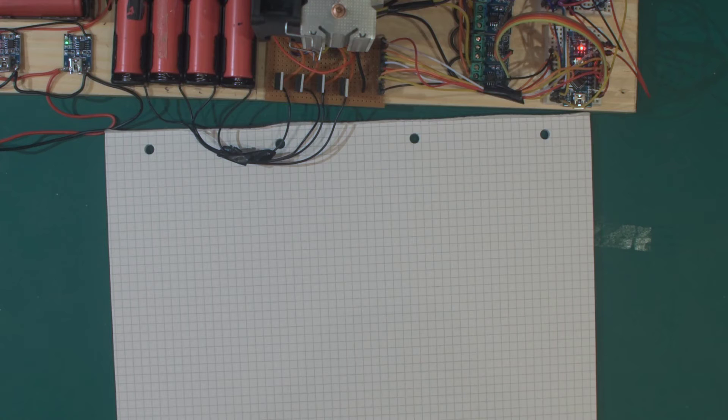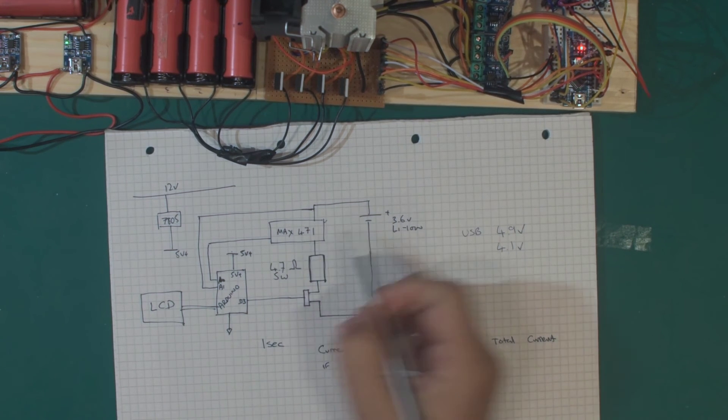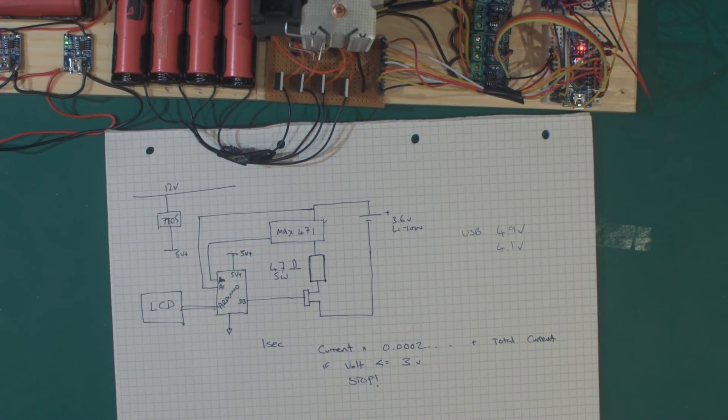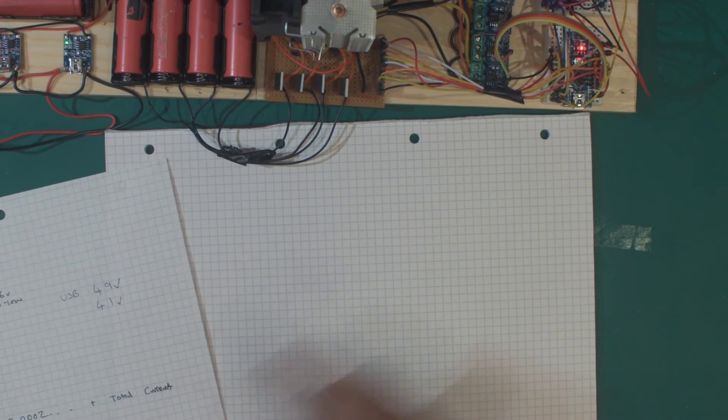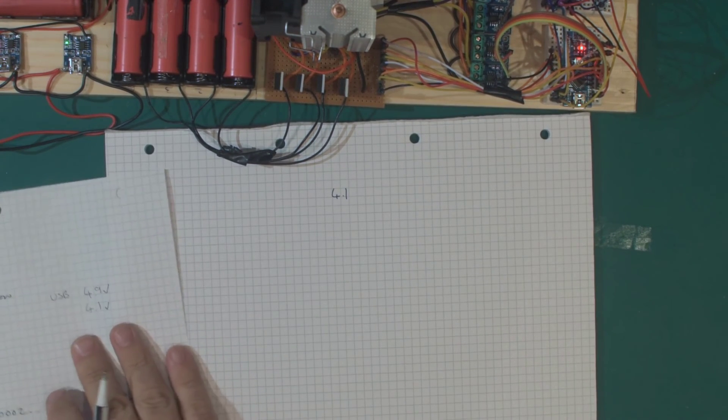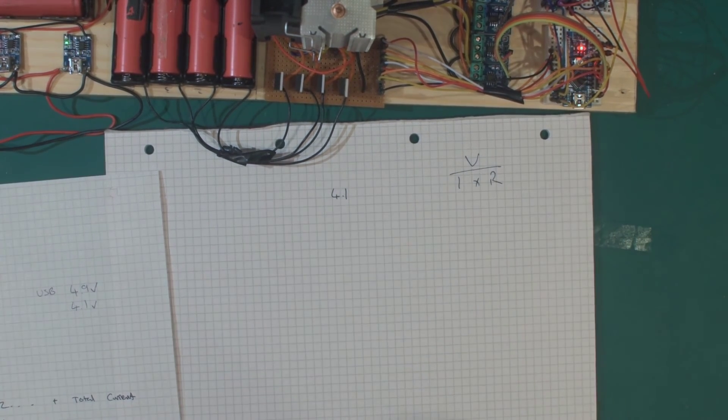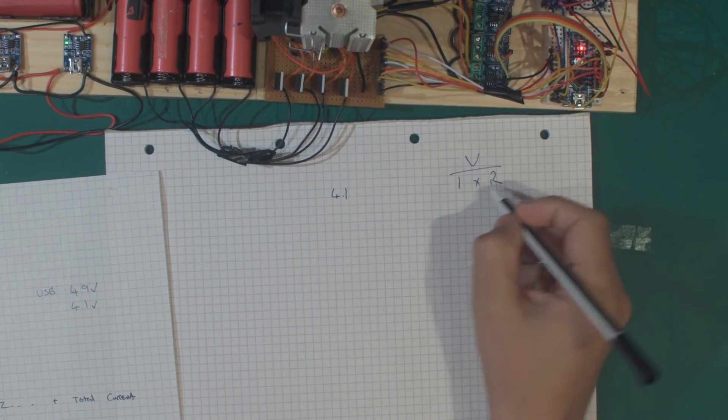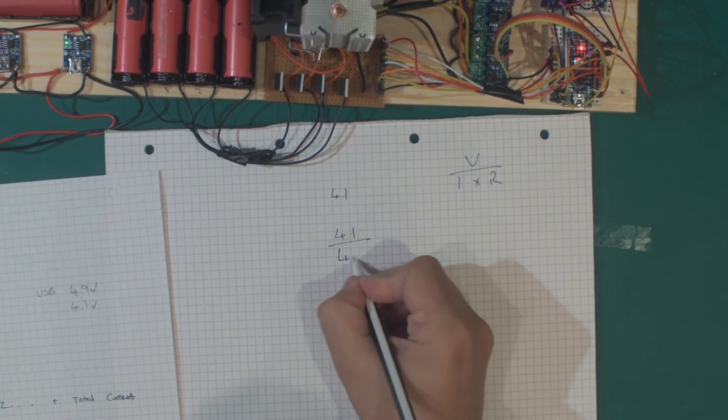The one thing I didn't talk about last time was one of the deficiencies of this method. Going back to this diagram, as this battery changes voltage over the period of the discharge, we start at 4.1 volts. If V equals I over R, then 4.1 over the resistance of 4.7 ohms...